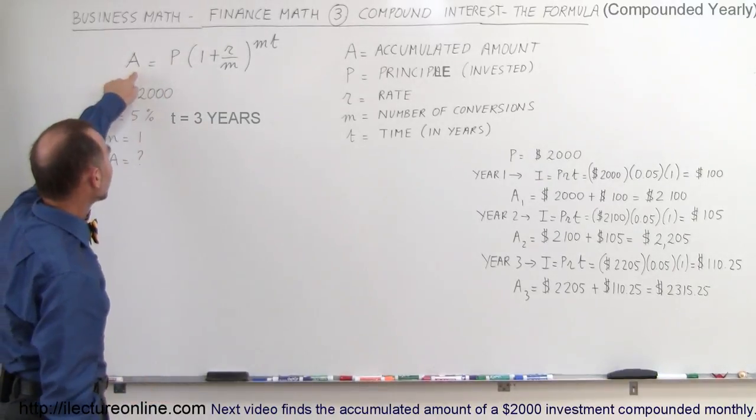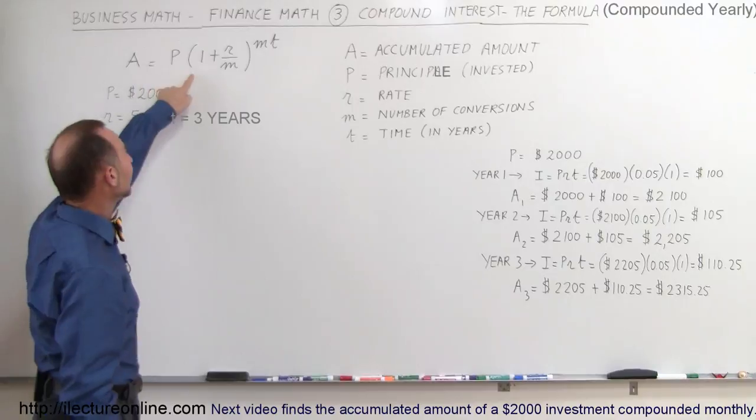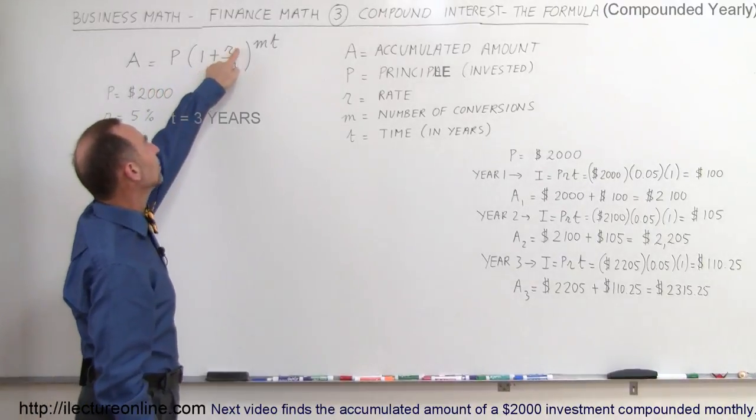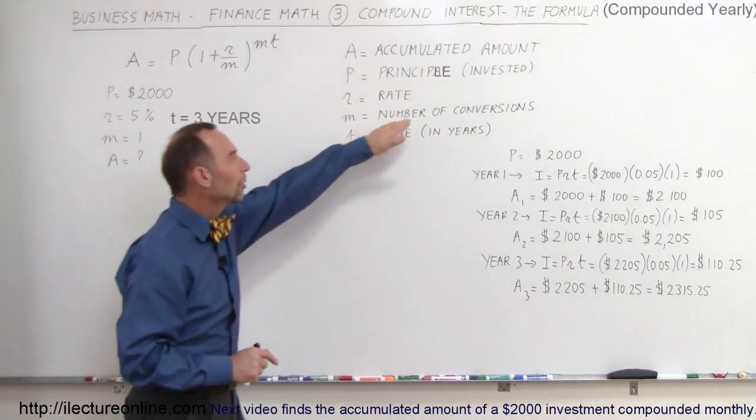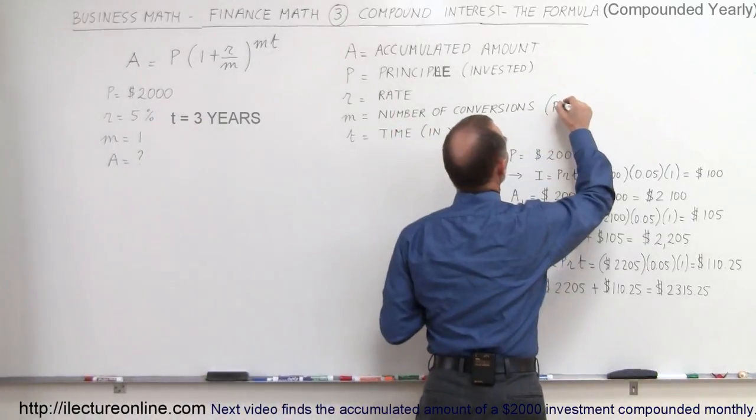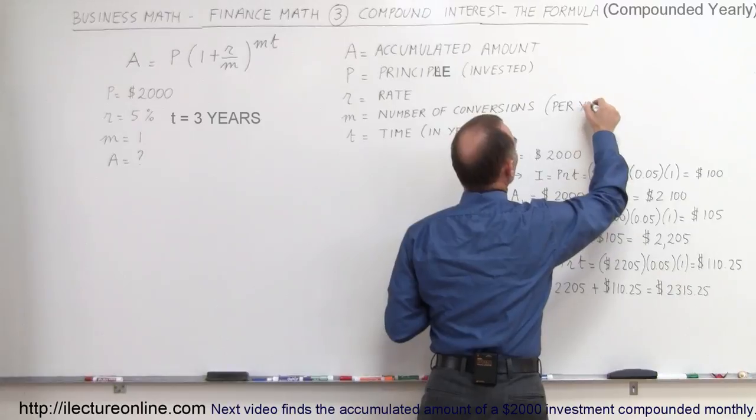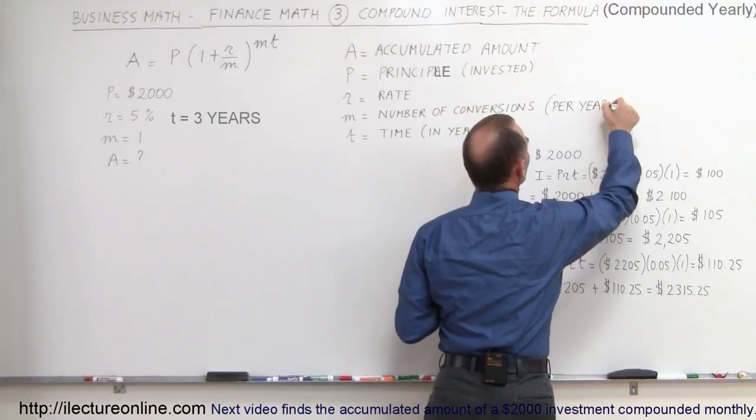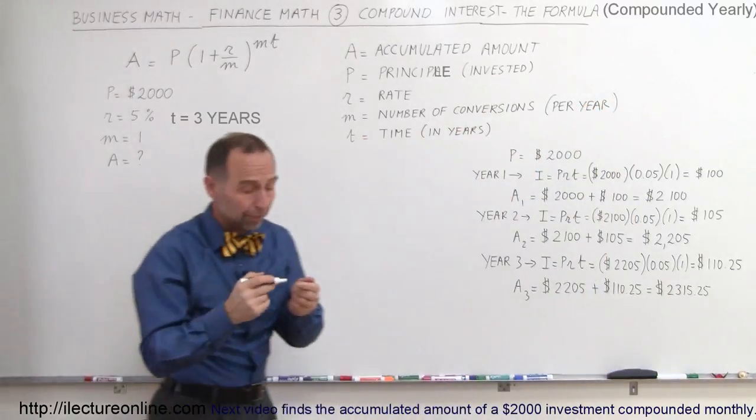So the accumulated amount is equal to the principal invested times the quantity (1 plus the rate divided by M). Now M stands for the number of conversions per year. So if you compounded once per year, M would be 1, but if you compounded monthly,